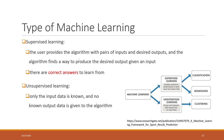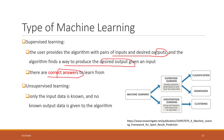For supervised learning, we provide the input and also the desired outputs, and we want to find a way to produce the designed output for a given input. We always have the correct answer to learn from. For unsupervised learning, only the input data is known and we don't know the output data.